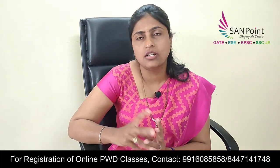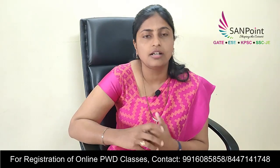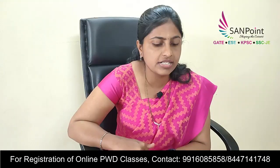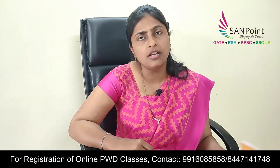The next subject is economics, with two questions asked — such as economist names and the father of a particular theory. Next is literature, where two questions appeared on topics like the books written by certain authors and questions related to literature in this PWD exam.